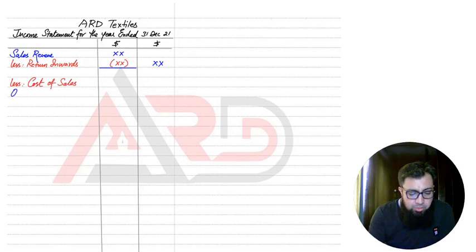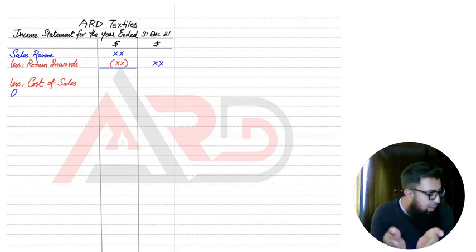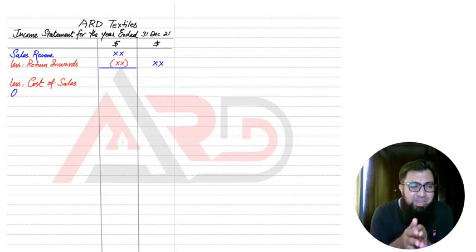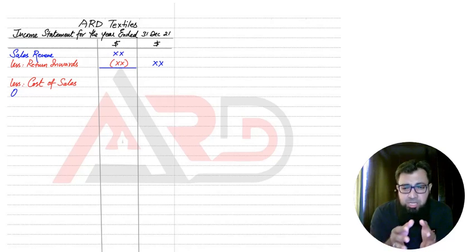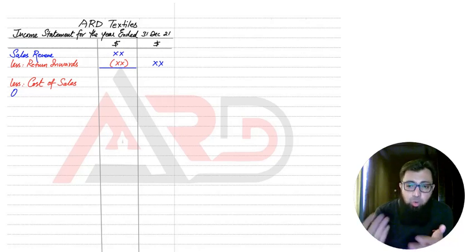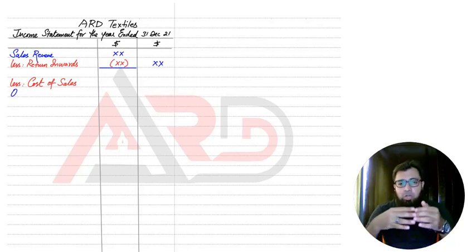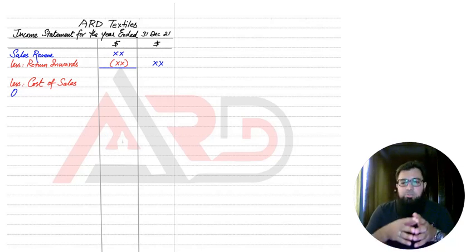Then we have cost of sales. Cost of sales is basically the amount we are incurring in order to make those goods available for our customers. There is a difference between cost of purchase and cost of sales. Cost of production is the amount spent in buying or manufacturing goods in the current period. But cost of sales means the production or purchase cost of the units that we have actually sold. For example, if we sold 100,000 units but produced 150,000 units, to satisfy the matching concept we calculate cost of sales for the 100,000 units sold.